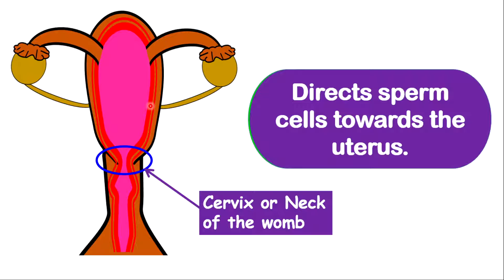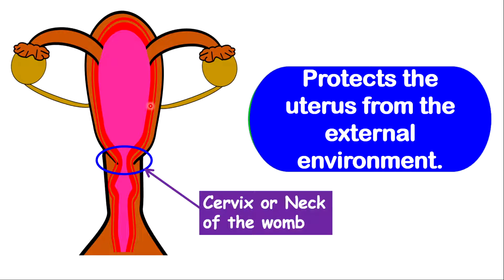The cervix also plays an integral role in directing the sperm cells towards the uterus. So as sperms deposit in the vagina, the cervix will help to direct these passages of the sperm cell into the uterus, and these sperm cells will eventually end up in the fallopian tube, hopefully trying to fertilize an egg.